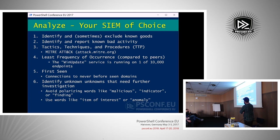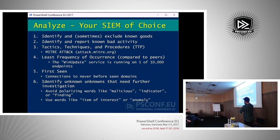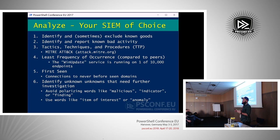Another useful technique is least frequency of occurrence — also called stacking. If one Windows Update service is running on only one out of 10,000 endpoints, it's worth investigating. First-seen is also valuable: if you've been monitoring something for months and you've never seen this process before, check it out. I like to avoid polarizing words like 'malicious,' 'indicator,' or 'finding' in analysis because people freak out — prefer words like 'item of interest' or 'anomaly.'